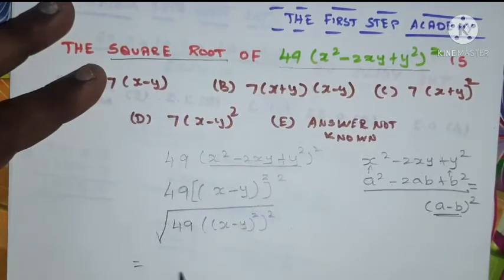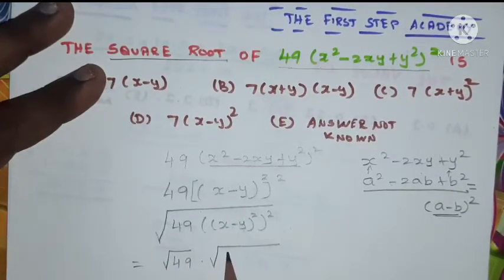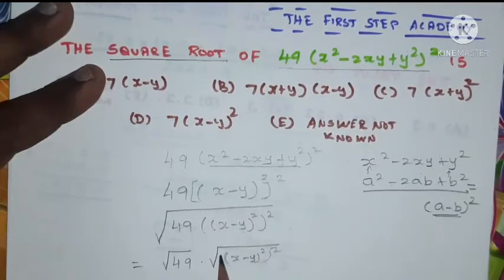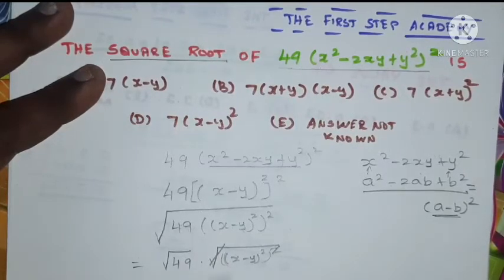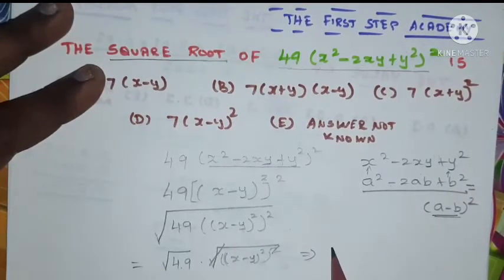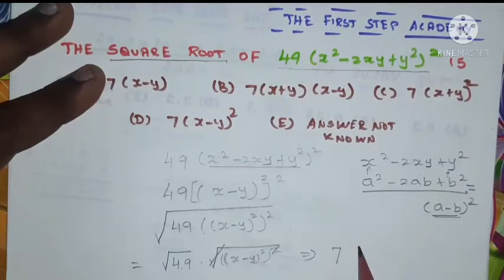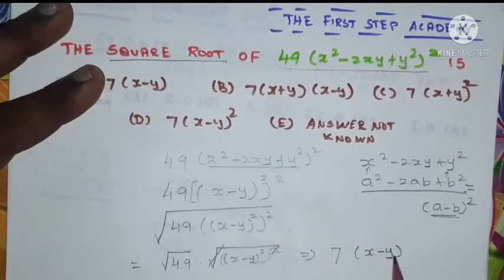We know the value as 7, where the rest of the value is (x minus y) whole squared. The square root and square will cancel. Square root of 49 is 7, and the rest of the value is (x minus y) whole squared.